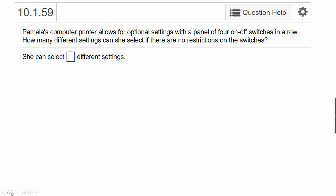This is an example from my math lab. It says, Pamela's computer printer allows for optional settings with a panel of four on-off switches in a row. How many different settings can she select if there are no restrictions on the switches?